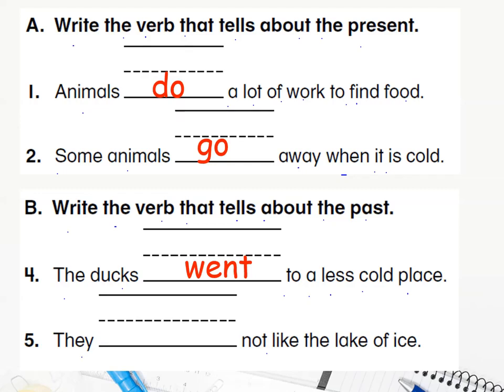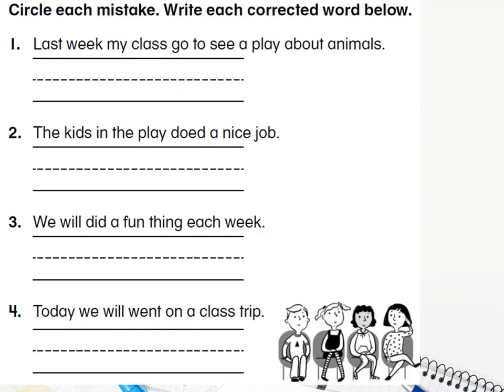Number five: 'They blank not like the lake of ice.' Do we say 'they did not like the lake of ice' or 'they went not like the lake of ice'? Clap your hands — we say 'did'! They did not like the lake of ice. Perfect and amazing!